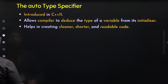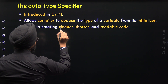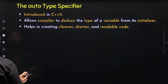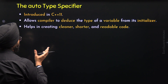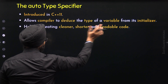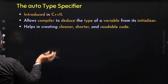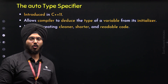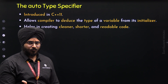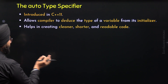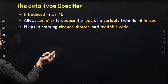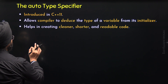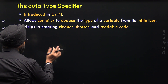It helps in creating cleaner, shorter, and readable code. If we use the Auto keyword for variables, then it makes our code cleaner, shorter, and readable. Not in every case should we use the Auto keyword — we will learn about when we should use it. But for now, just understand that using Auto makes the code cleaner, shorter, and readable. Now through an example program, let's understand how to use the Auto keyword in our C++ programs.